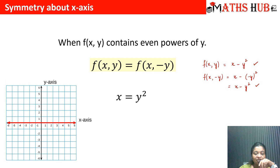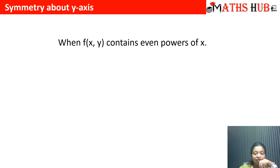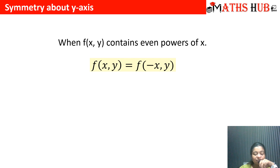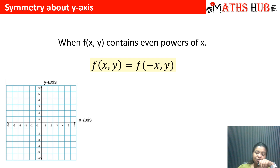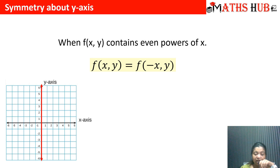Now let us talk about symmetry about the y-axis. Whenever a function contains even powers of x, the graph is symmetrical about the y-axis. In this case, replace x with −x, and if the function remains unchanged, the function is symmetrical about the y-axis. Graphically, the y-axis acts as the mirror — whatever image is on the left side, the same thing appears on the right.